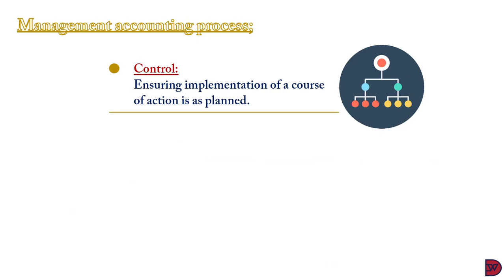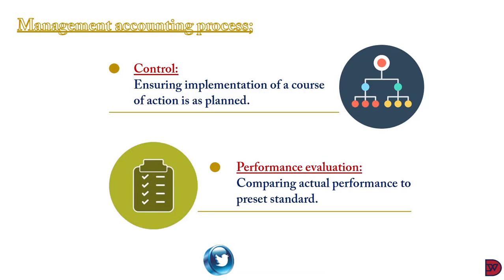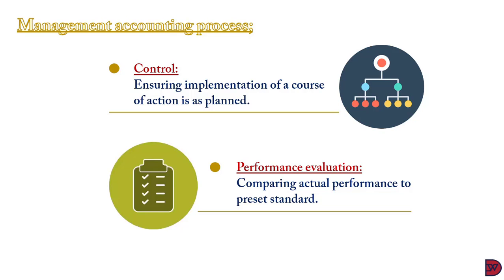Control ensures that ongoing activities are implemented as planned, and necessary interventions are made if they deviate — for example, checking month by month to know if the company is overspending or underspending on wages and salaries. Lastly, performance evaluation juxtaposes actual performance against the budget at the end of a session or project to ascertain if things went as planned, for example measuring a department's performance against its target.